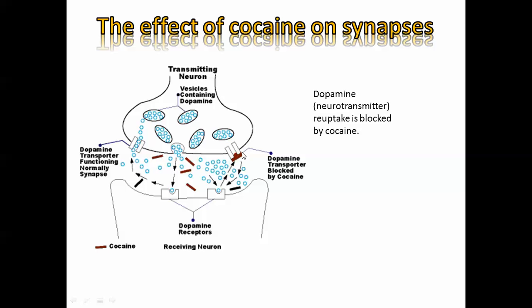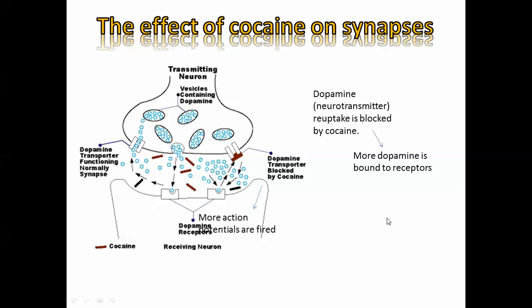But cocaine acts as a blocker — it blocks the reuptake channels. So when the neurotransmitter tries to go back to get repackaged into vesicles, it cannot, because these reuptake channels are being blocked. As a result, there's more dopamine hanging around and it binds to receptors even when it's not supposed to, causing more firing. What you perceive is a more stimulated nervous system — more action potentials are fired as a result.